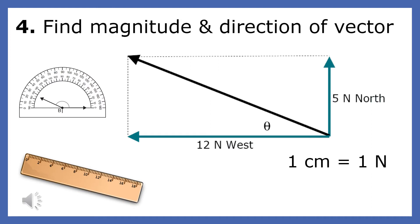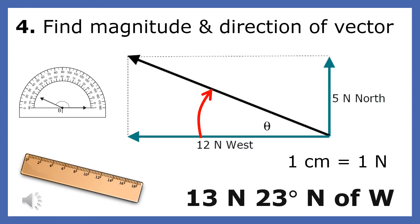The resultant drawn here is 13 centimeters long, so its magnitude is 13 newtons. The angle between the force and the easterly direction is 23 degrees, so the direction is 23 degrees north of west.